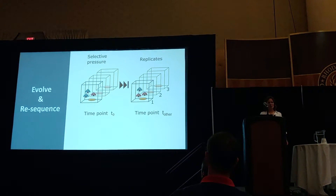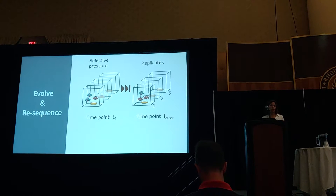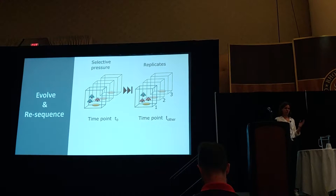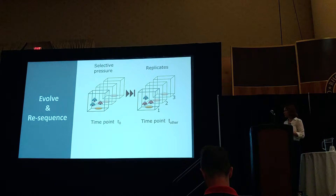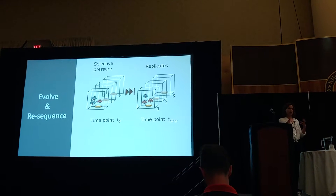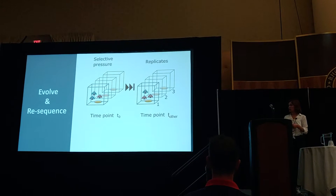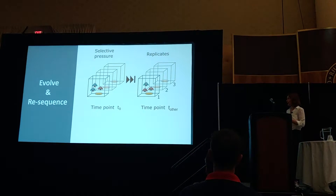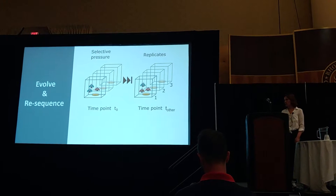So in an evolve-and-resequence experiment, what we tend to do is go out into the wild, collect some organisms, take them to the lab, and set up experimental populations. You obviously want to apply some sort of selection pressure, and then you try to predict changes across generations.